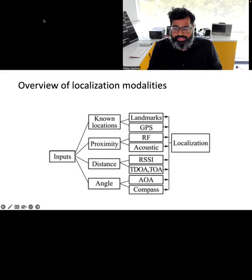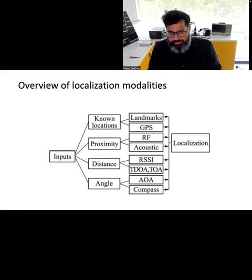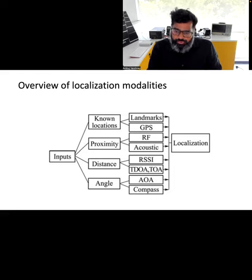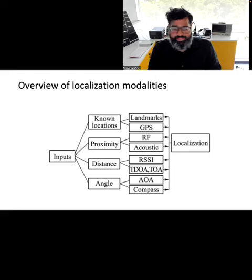There are a number of different modalities and parameters that can help us determine location information, and localization has seen a great deal of research effort over the past decades. We show some of these modalities on the slide. In this course, we are only going to study a handful of these methods. For example, over the coming slides, we are going to look at using the received signal strength indicator of wireless signals to determine the location of a target device.